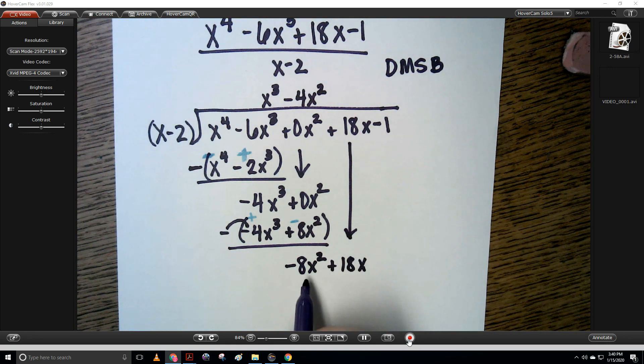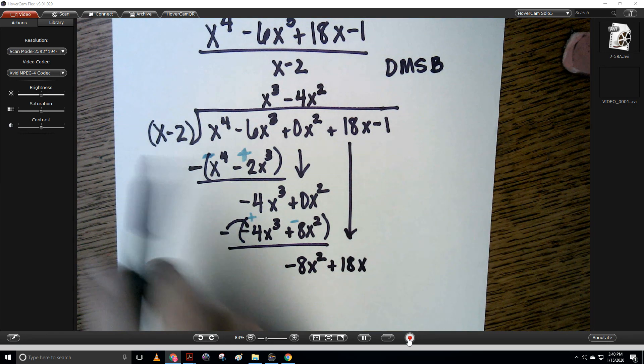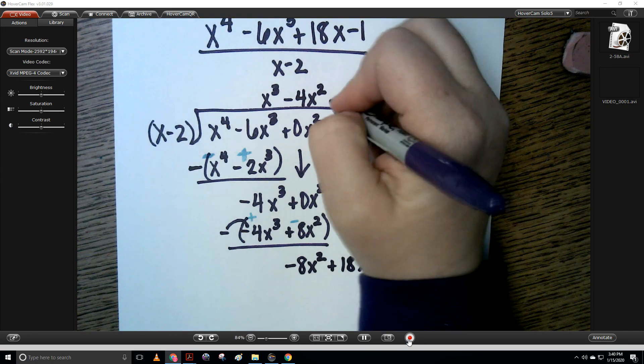I'm going to divide this term by this term, the first term, and I get negative 8x.